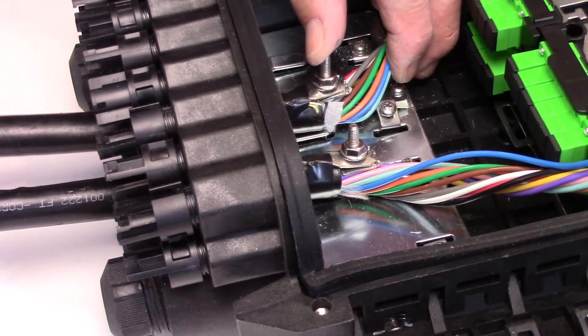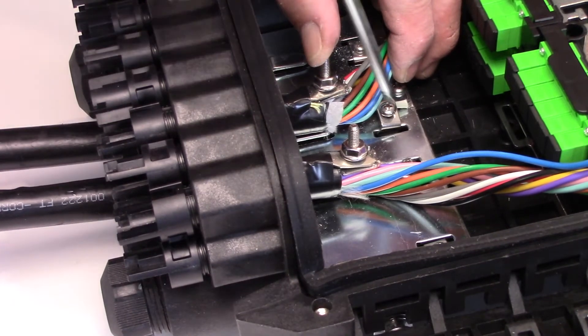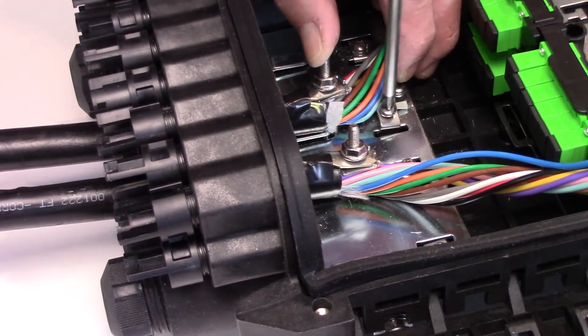Insert the bonded cable into the FSDC and, if required, secure the strength member under the strength member clamp.